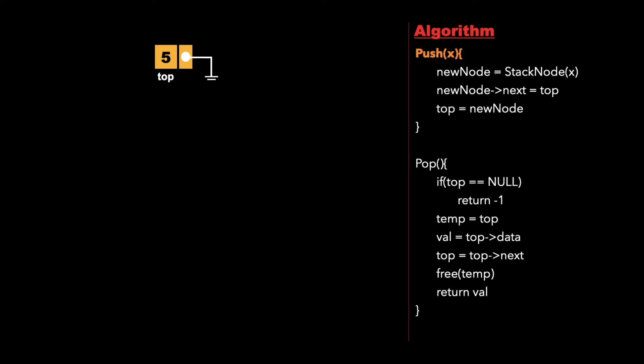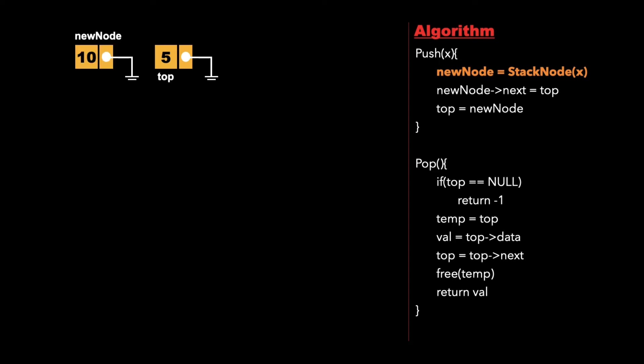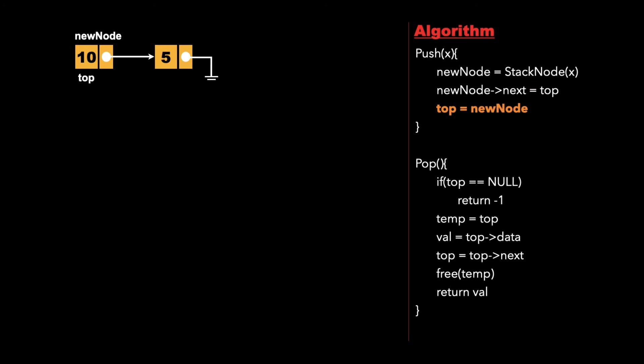Now let's insert value 10 into the linked list. We create a new node with value 10 and next pointer pointing to null. Then we make new node's next point to top, so node 10's next pointer will point to 5. Then we make top equal to new node, so top will now point to 10.